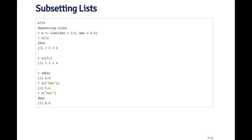In the next example, I'm using the dollar sign — x dollar bar — and that gives me the element associated with the name bar, which is the single number 0.6. I can also use the double bracket operator and pass it a string: x double bracket quote bar is the same as doing x dollar bar, and it just gives me 0.6.